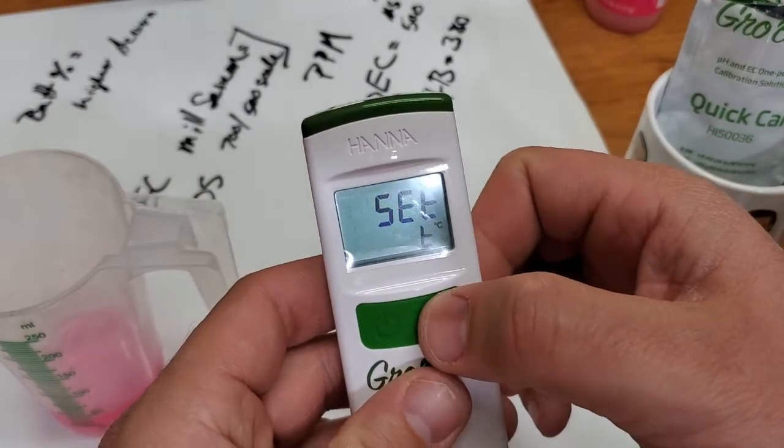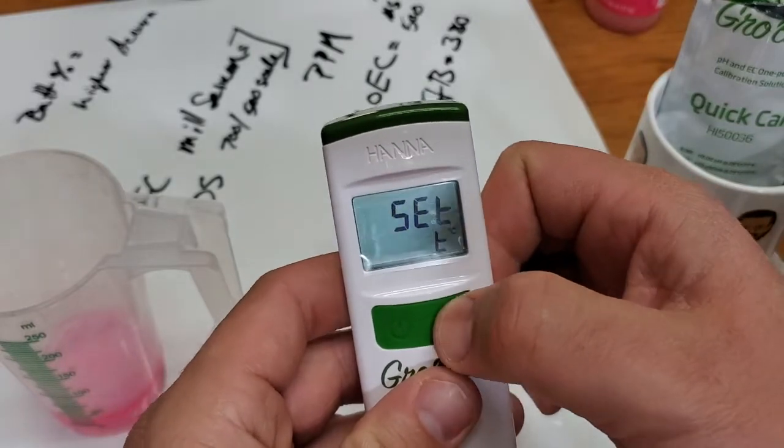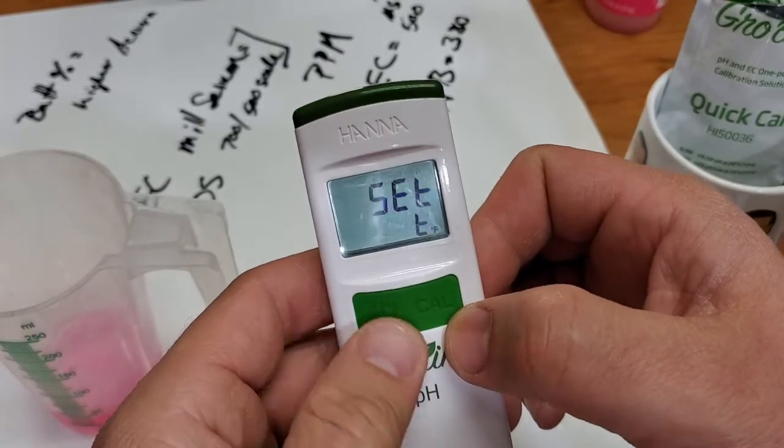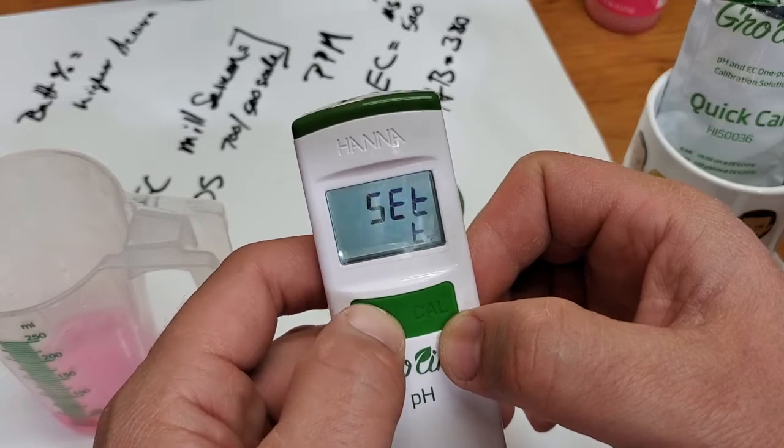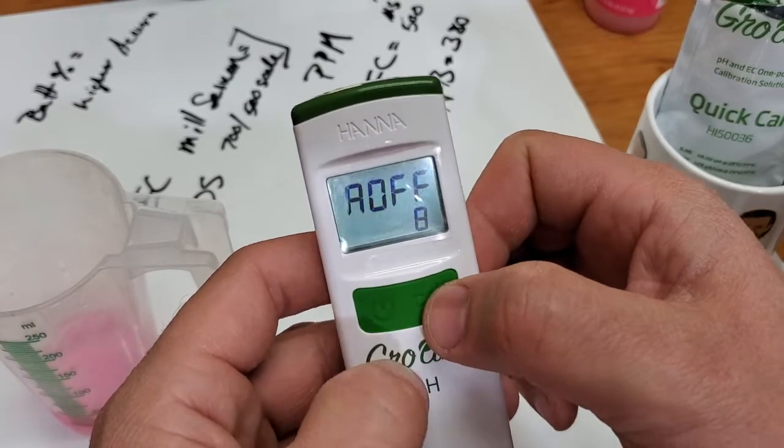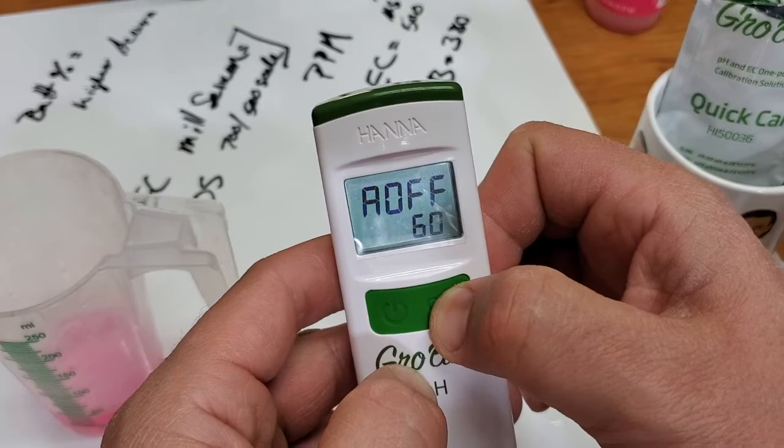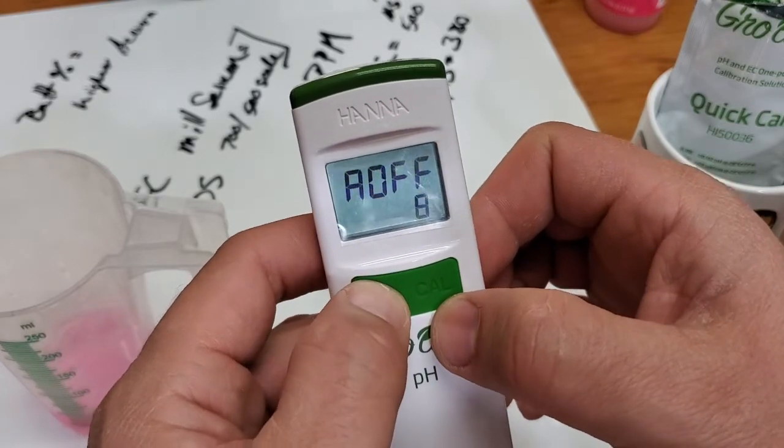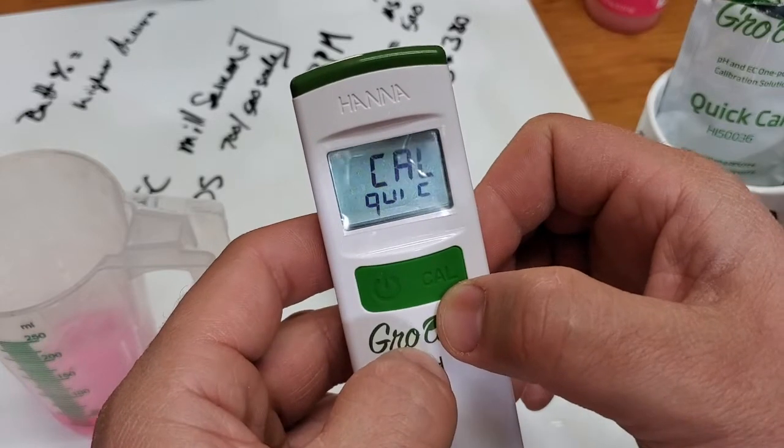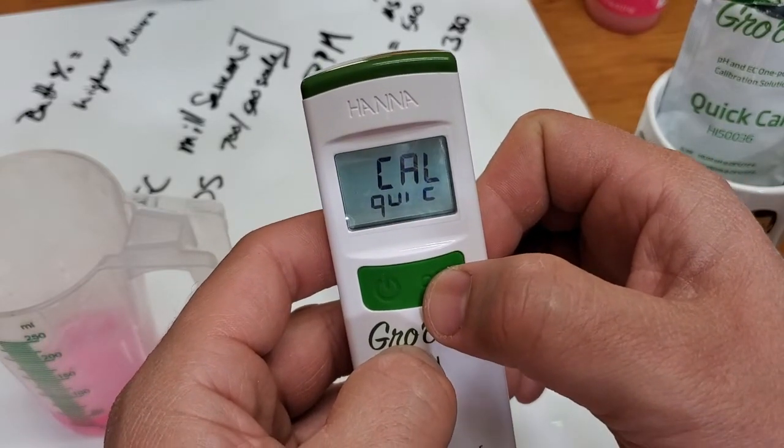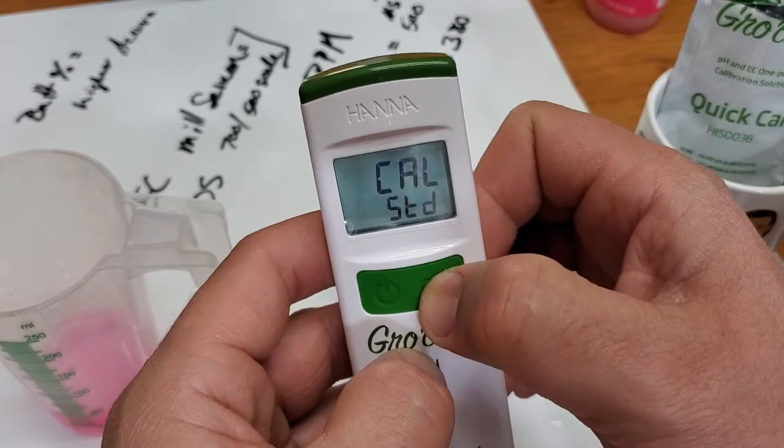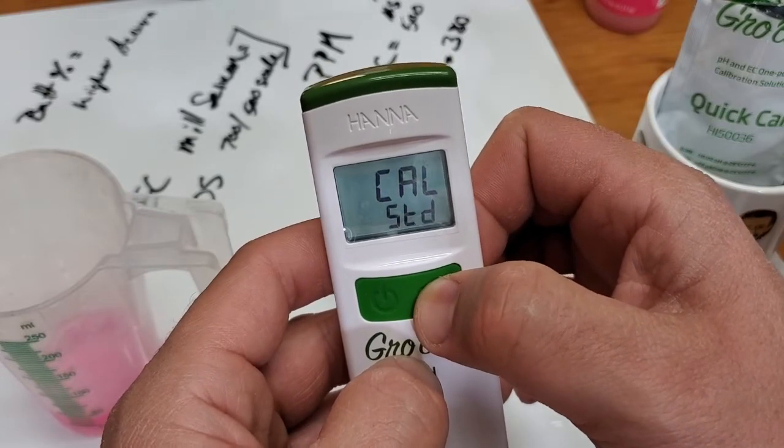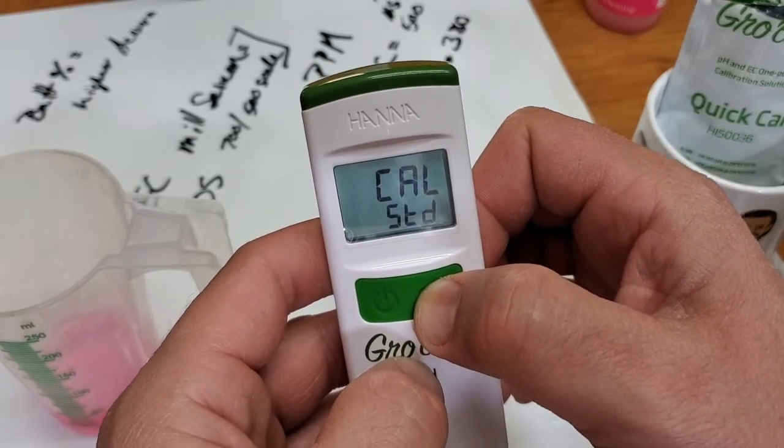Temperature is in Celsius, so we toggle using this Cal button, switch it back to Fahrenheit. Set for auto off at eight minutes. You can set it for 60 minutes or to stay on. We're gonna leave it at eight minutes so it'll timeout. We're gonna do a Quick Cal demonstration, but you can do a standard calibration using four and seven. Leave that on Quick Cal.